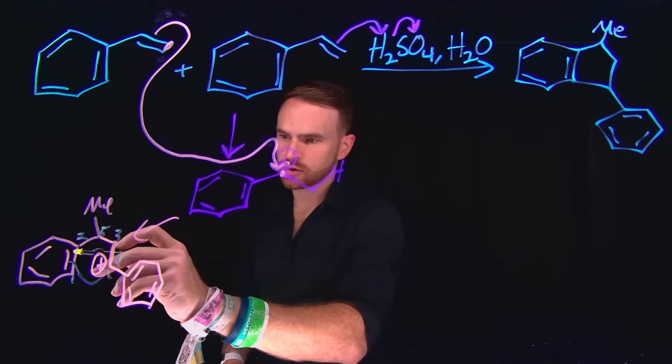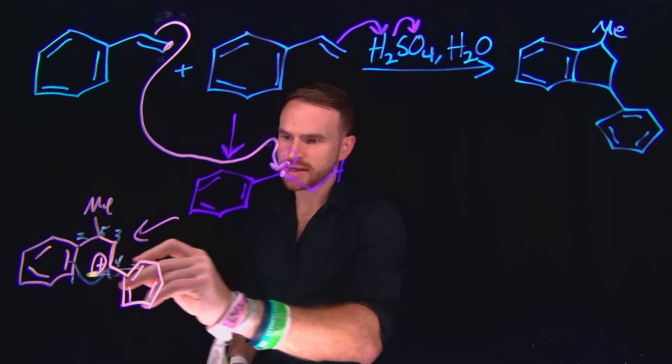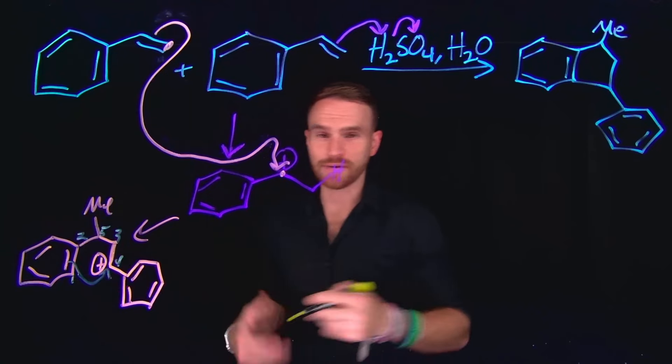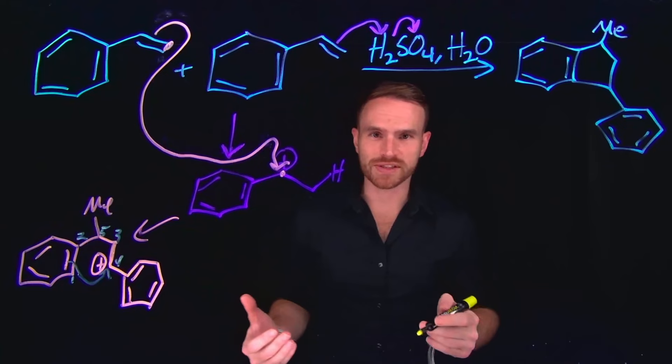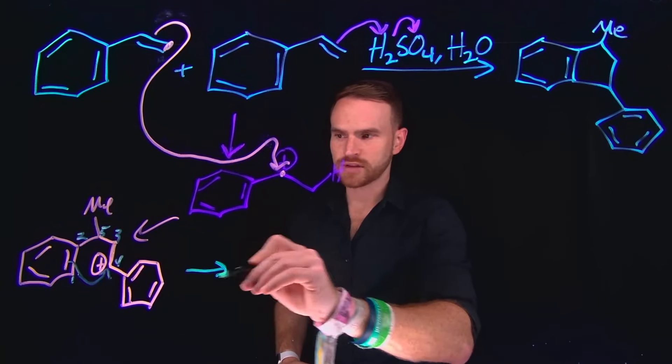And remember, in doing so, since these pi electrons is what is giving us the new bond at this position between carbon one and four, as I've labeled them, this is going to leave a carbocation at the two position. So when we draw the product of this transformation...